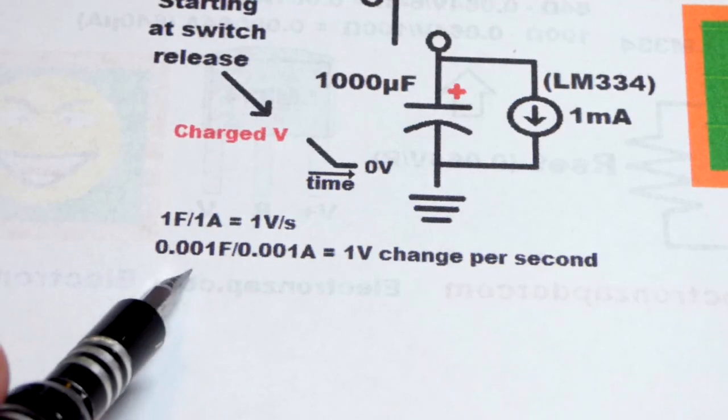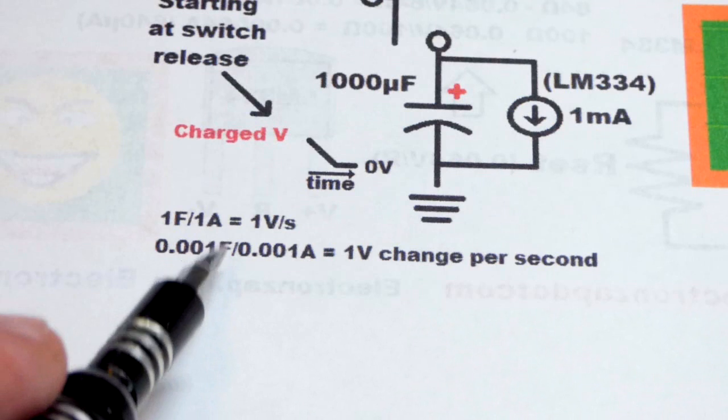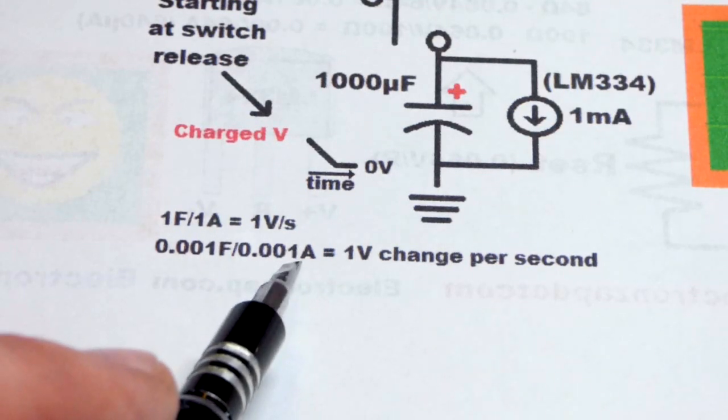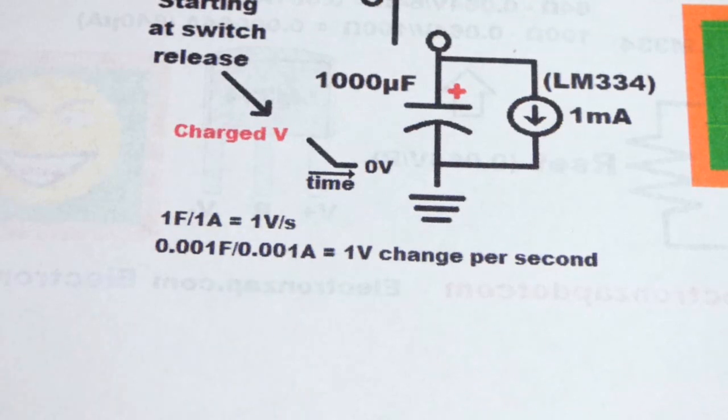Larger value capacitors for a given current take longer, smaller values go quicker. And if you have a set capacitance, larger currents go faster, smaller currents take longer.